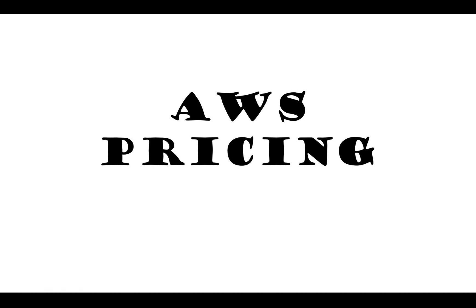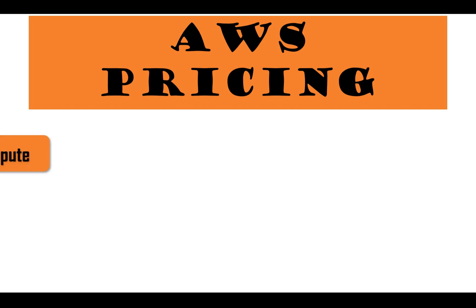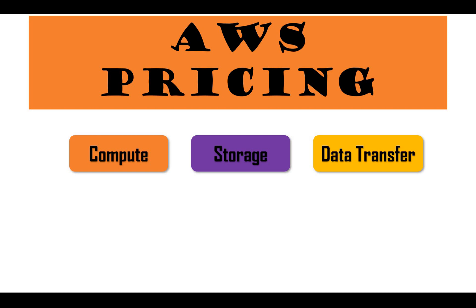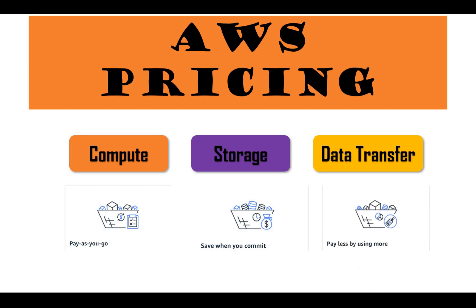Have you ever wondered how pricing is done in different cloud providers, whether it's AWS, Azure, or GCP? It's really important because when we are using cloud we should be very clear about how the pricing is done, otherwise we will end up with a huge bill. We need to have a clear picture on how compute services, storage, data transfer, and different kinds of resources are charged.